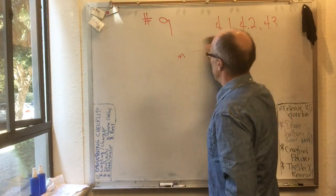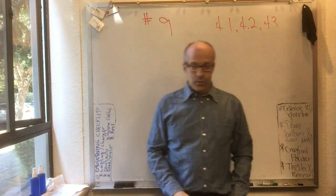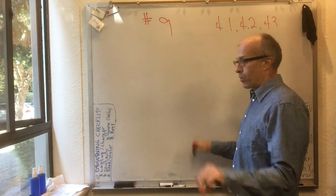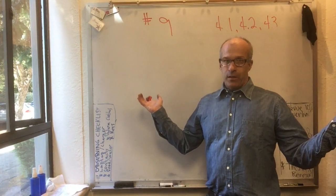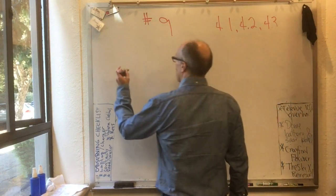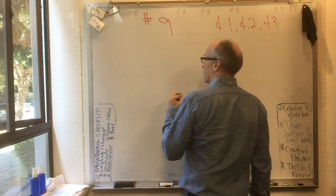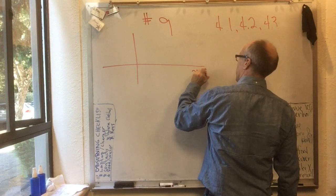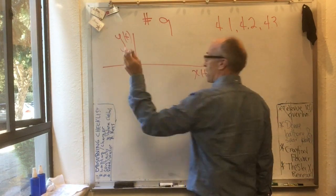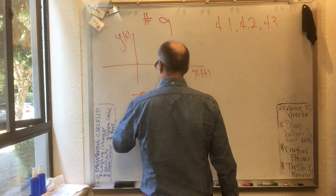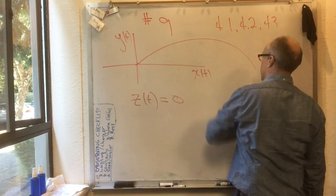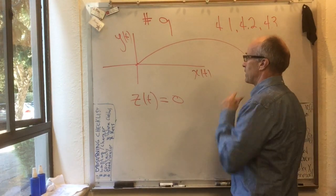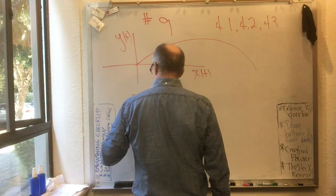Let's go on to 4.2. Projectile motion is probably the most important special case — the one most story problems are asked about. Here's the situation: we have a coordinate system with x, y, and z directions (z coming out of the board). We let z of t be zero so the projectile stays in the x-y plane, tracing some kind of parabola.